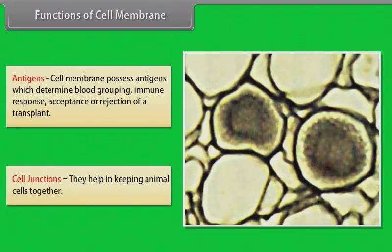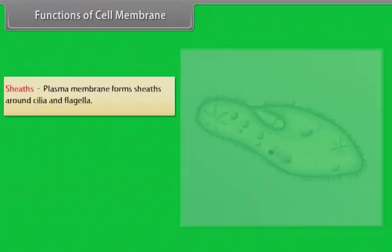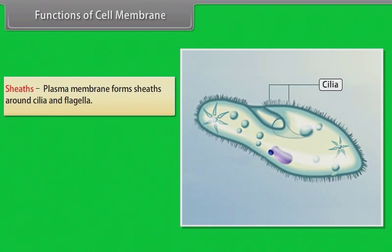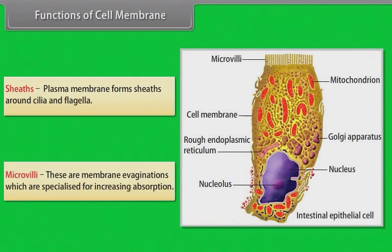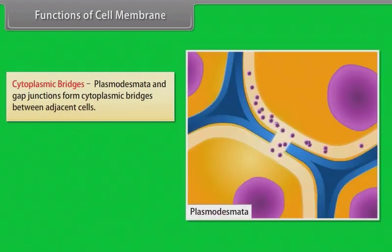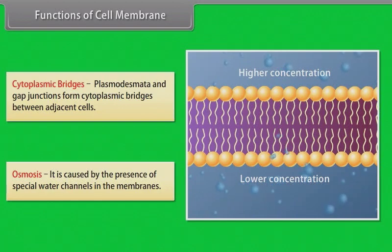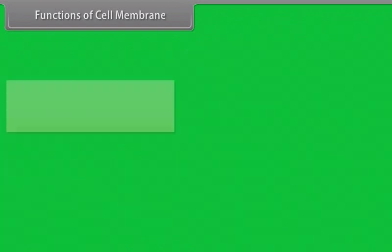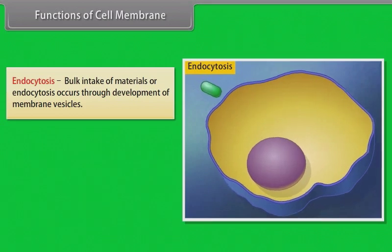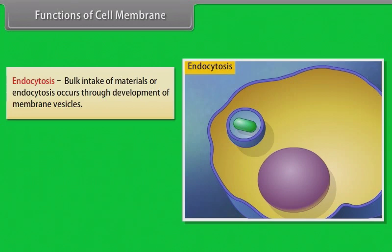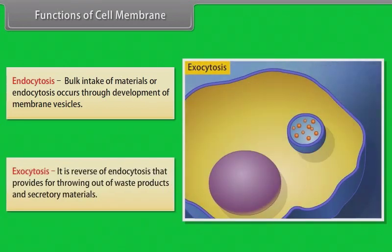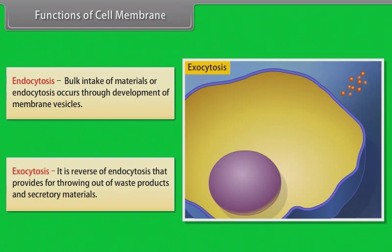Cell junctions help in keeping animal cells together. The plasma membrane forms sheets around cilia and flagella. Microvilli are membrane evaginations specialized for increasing absorption. Cytoplasmic bridges — plasmodesmata and gap junctions form cytoplasmic bridges between adjacent cells. Osmosis is caused by the presence of special water channels in the membranes. Endocytosis — bulk intake of materials occurs through development of membrane vesicles. Exocytosis is the reverse of endocytosis, providing for the expulsion of waste products and secretory materials.